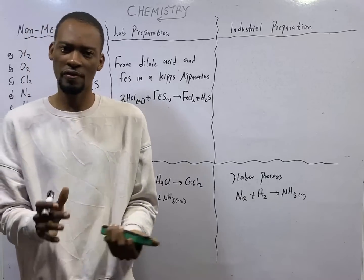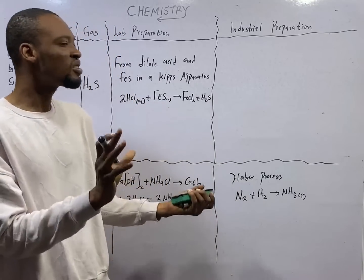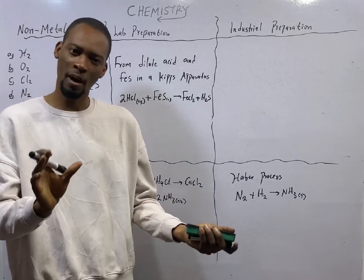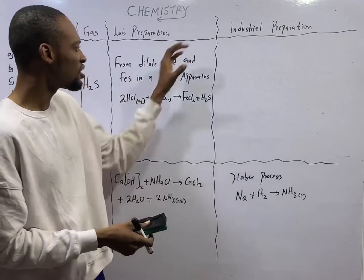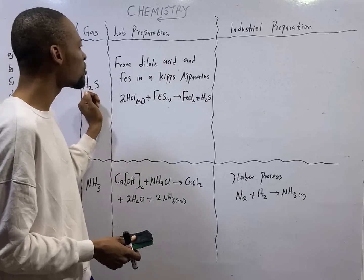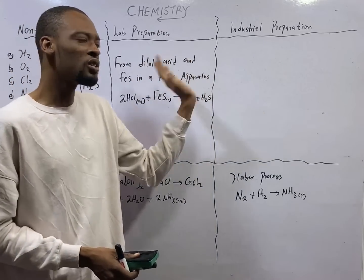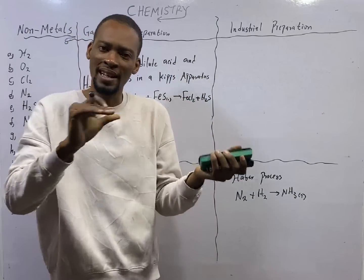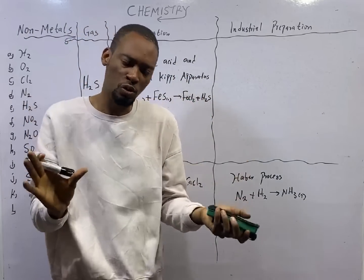Hydrogen sulfide gas is prepared in the lab using Kipp's apparatus. Not just in the lab. That is the general way to prepare hydrogen sulfide gas. JAMB doesn't expect you to know separately industry or lab. This is how we prepare hydrogen sulfide gas and this is what you are supposed to know.